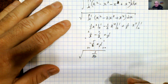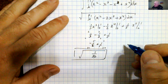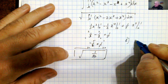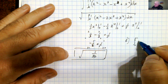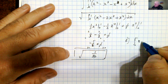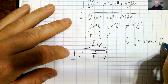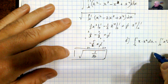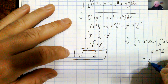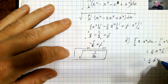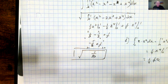Now for part D, to check if they're perpendicular, I take the inner product of f and g: the integral from 0 to 1 of x times x squared dx, which is x cubed. Integrating gives x to the 4th over 4, which evaluates to 1/4. Since this is not equal to 0, these two vectors are not orthogonal. I hope that was helpful, and I'll see you in the next video.